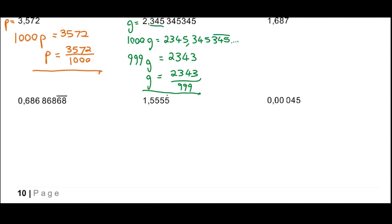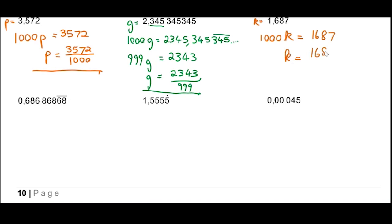The next one terminates: 1.687. Let that be k. We need to multiply by 1000 to get a whole number, giving 1000k = 1687. So k = 1687 over 1000. We've taken this rational number and written it as a ratio of two whole numbers.